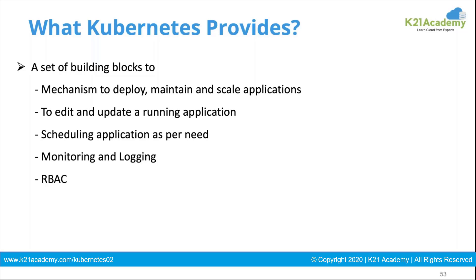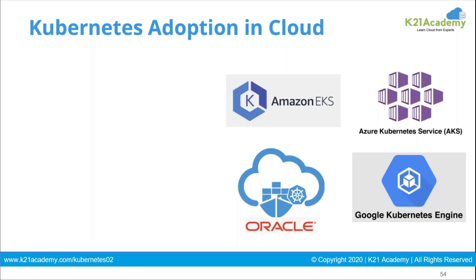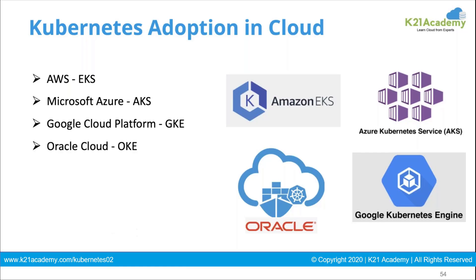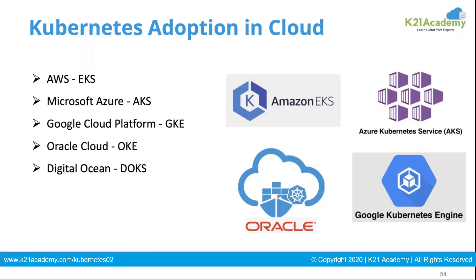Monitoring, logging, and authentication and authorization are also key features — Kubernetes has role-based access control for authorization. Because this technology is one of the hottest, and everyone is shifting from virtual machines to the container world, all major cloud providers offer solutions. Amazon came with Amazon EKS, Azure came with Azure Kubernetes Service, we have Google Kubernetes Engine, Oracle's Container Kubernetes Engine, and DigitalOcean's Kubernetes Service as well.